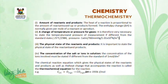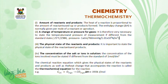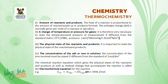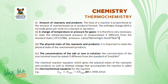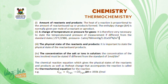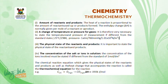Two: a change in temperature or pressure for gases. It is therefore very necessary to state the temperature and pressure of measurement if different from the standard states. Three: the physical state of the reactants and products — it is important to state the physical state of the reactants and products. Four: the concentration of salt or ions in solution — the concentration of the ions involved must be stated if different from the standard of one mole per dm³. The chemical equation which gives the physical state of the reactants and products as well as the heat change that accompanies the reaction is called a thermochemical equation.